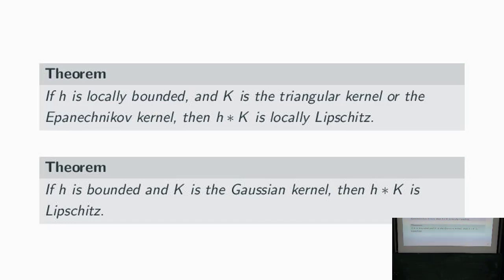These are our main results. If h is locally bounded and we use either the triangular kernel or the Epanechnikov kernel, then the convolution is locally Lipschitz. And if h is bounded, then convolving with the Gaussian kernel gives a Lipschitz function. In short, we inherit the smoothness from the thing we're convolving with.